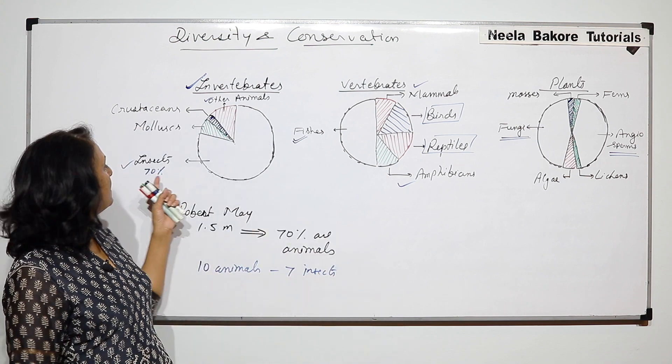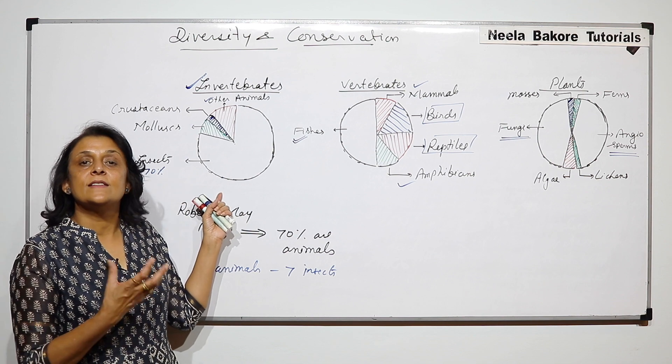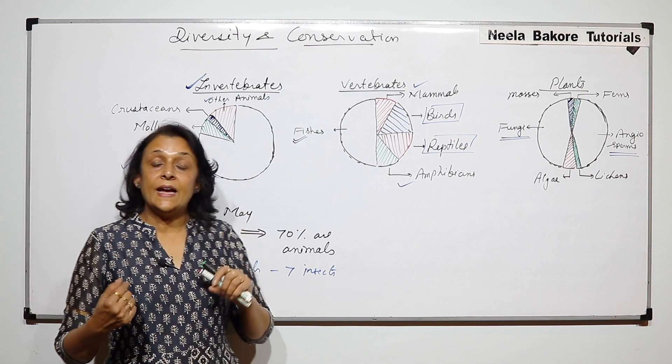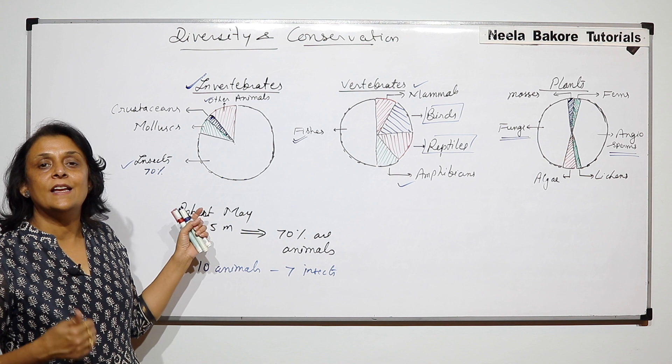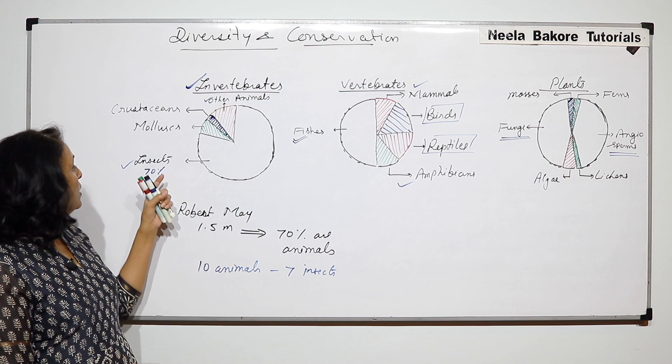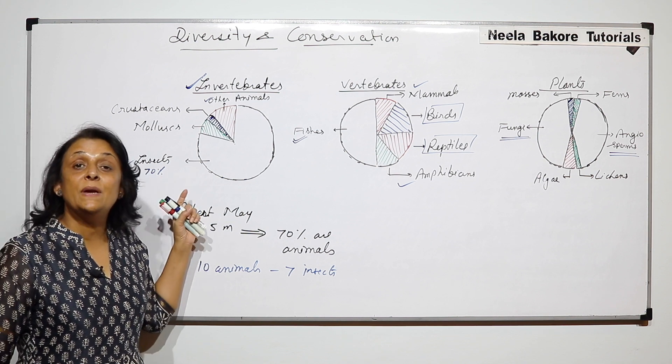When we talk of animal kingdom and we come to arthropoda, we say this is the biggest phylum. And in that arthropoda we have arachnida, crustacea, insect and all. So insects occupy the biggest group.